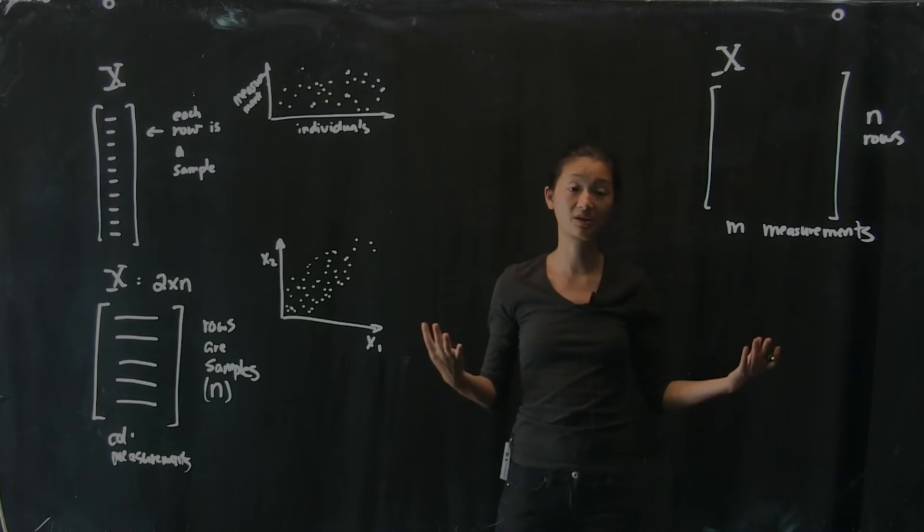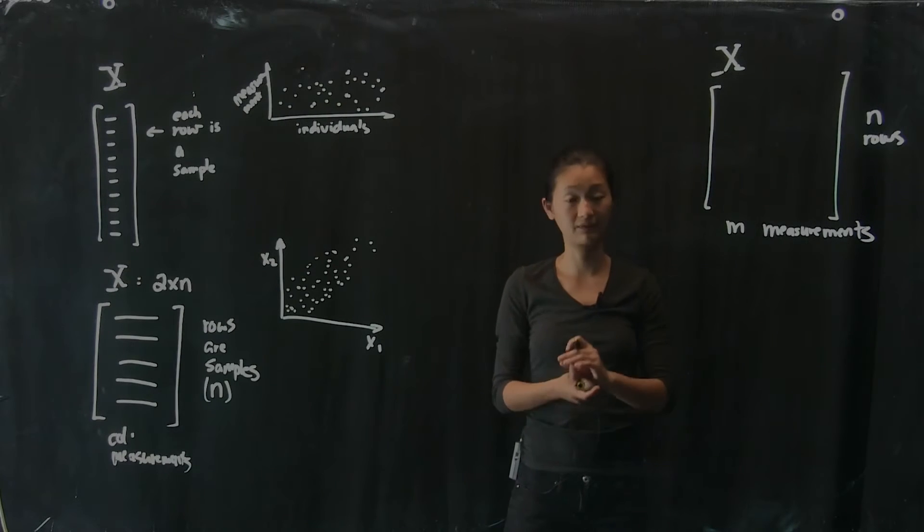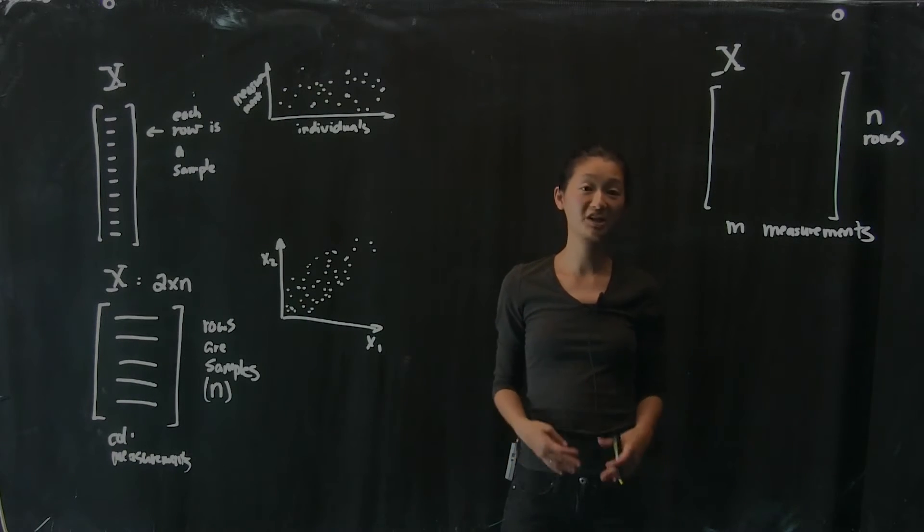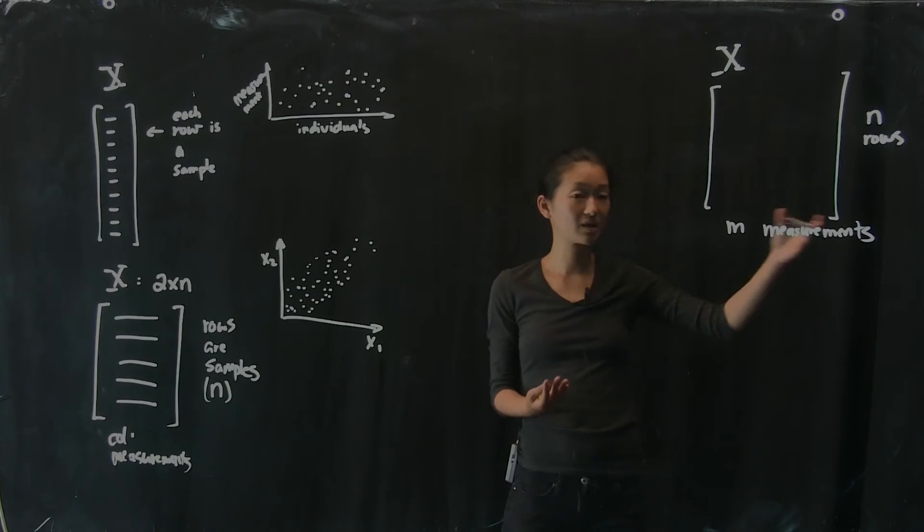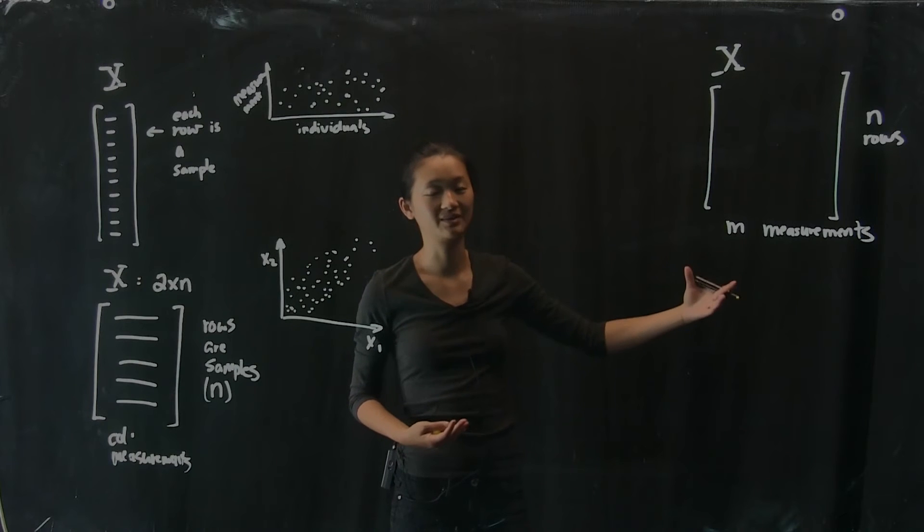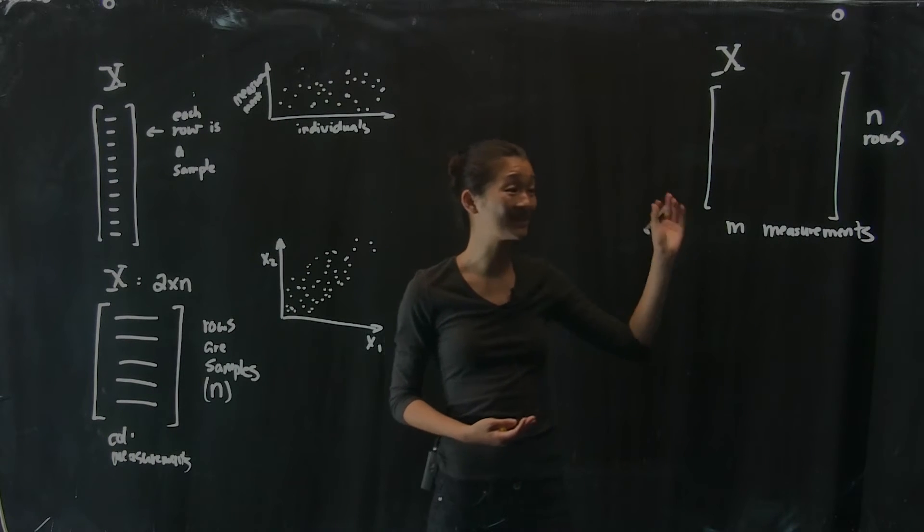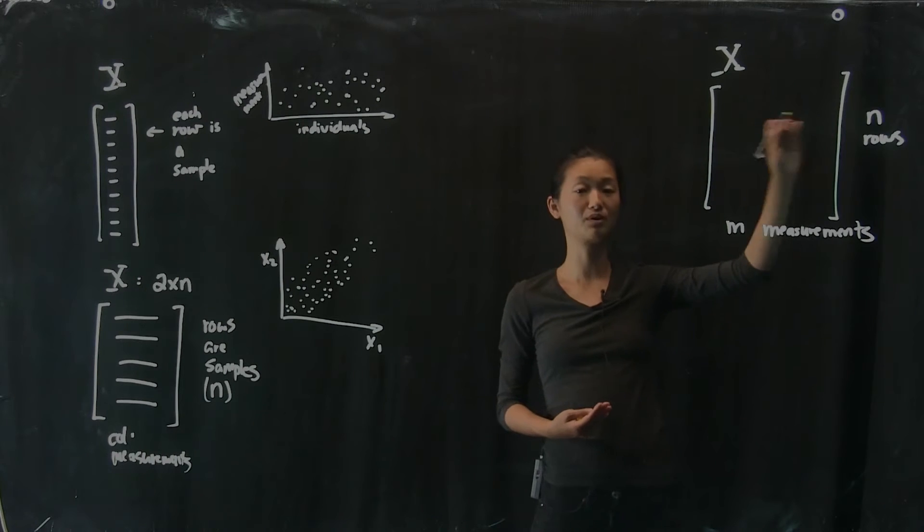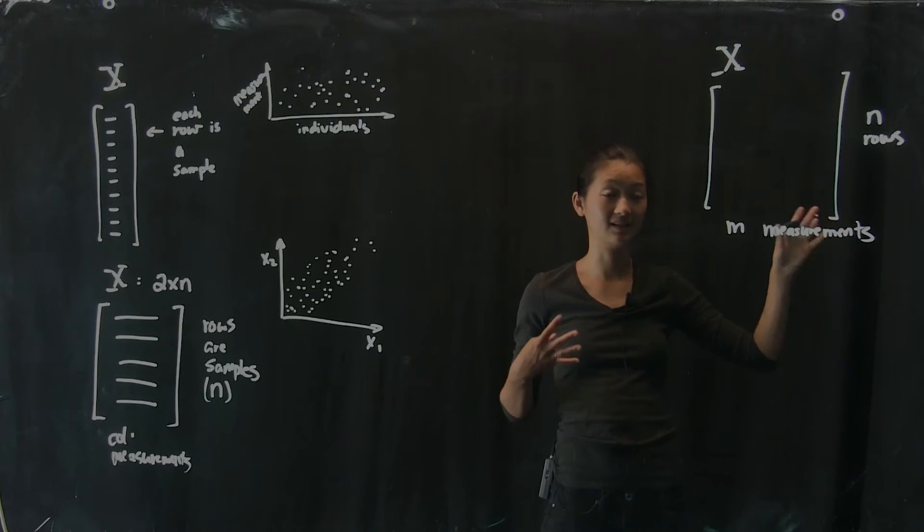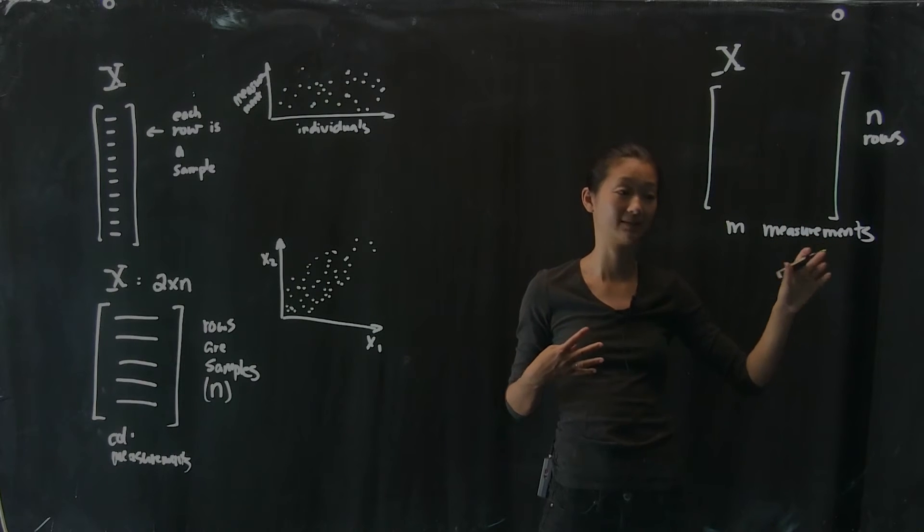So for example, let's take for each person, for each row, we're going to measure the length of their thumb, the length of the index finger, the length of every other finger, how much they weigh, how tall they are, what their shoe size is, what their cholesterol level is, and so on and so forth. And if you think about all the things you can possibly measure about each individual person, and stuff into this data matrix, where every row corresponds to all the numbers for each person, this is what we call a high dimensional data set.